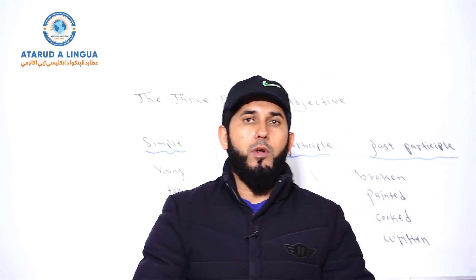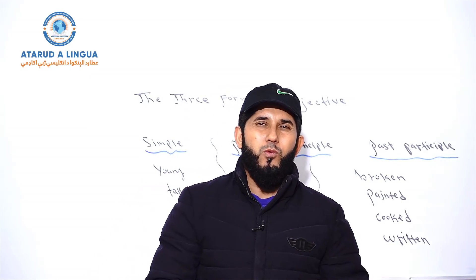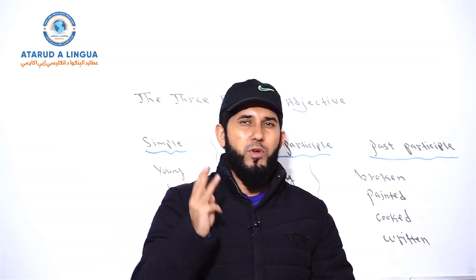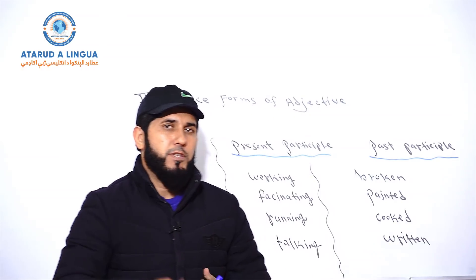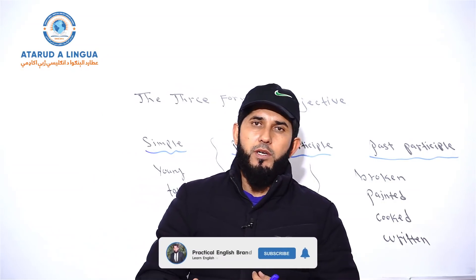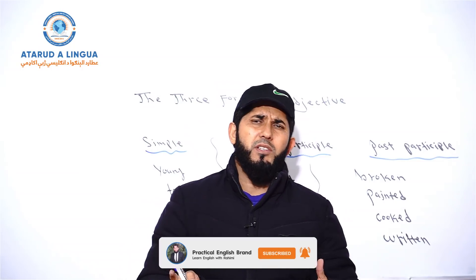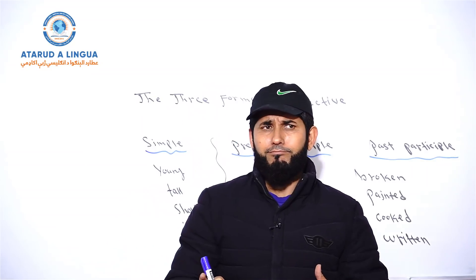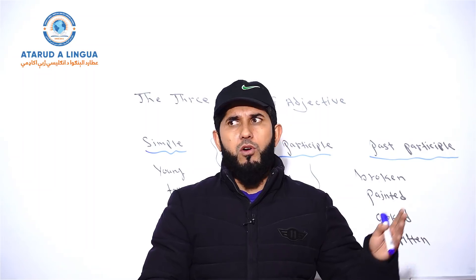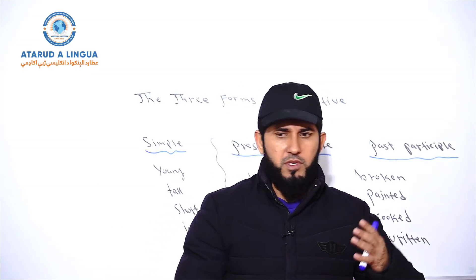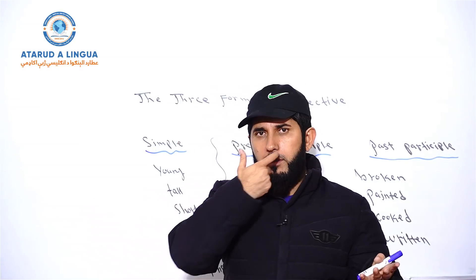Today I want to explain the three forms of adjective. We have simple adjectives, we have present participle adjectives, and we have past participle adjectives. Simple adjectives are not taken from verbs, like short and tall, cheap and expensive, young and old — these are simple adjectives.